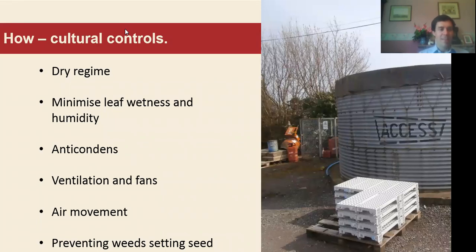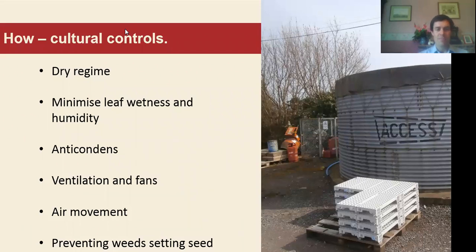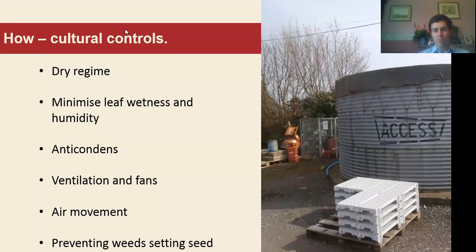On to today's talk — first of all, thinking about cultural controls, vitally important. Maintaining a dry regime is very useful to prevent diseases, particularly as we move into autumn and winter as disease prevalence increases. A dry regime not only helps to control foliar diseases such as Botrytis but also root diseases such as Pythium and Phytophthora, since if media is very wet plants are predisposed to those root pathogens, which can cause reductions in growth and losses.